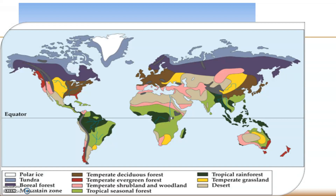Climate is related to location relative to the equator: the closer to the equator, the higher the temperature, with decreasing temperatures as you travel north or south. Climate is also related to elevation — the higher in elevation, the cooler the temperature, and as a result, different types of vegetation will be present.